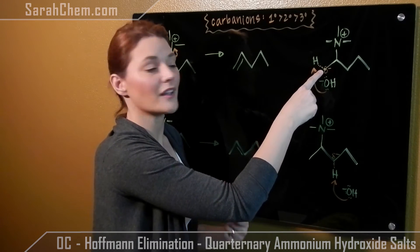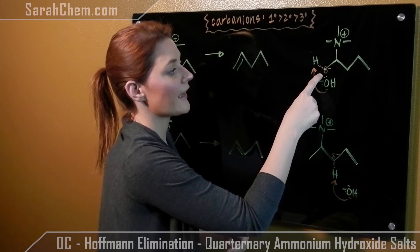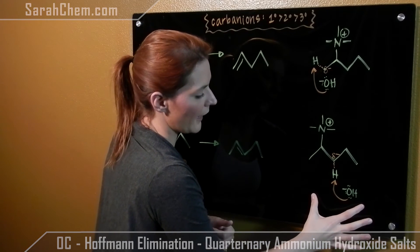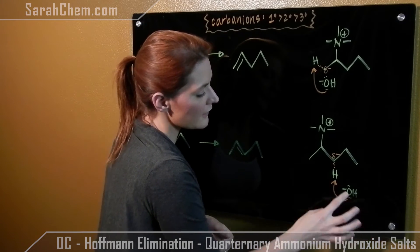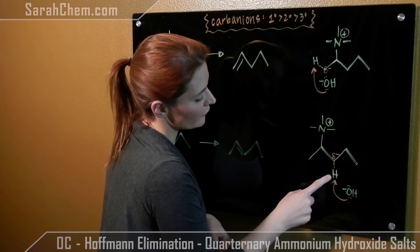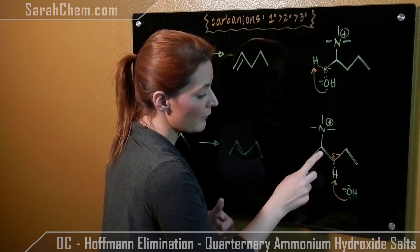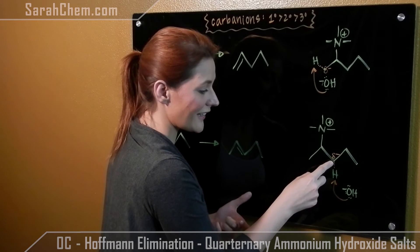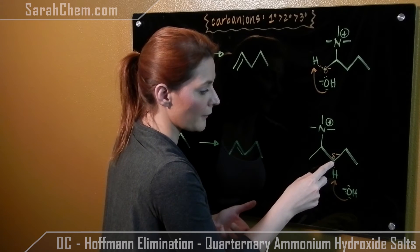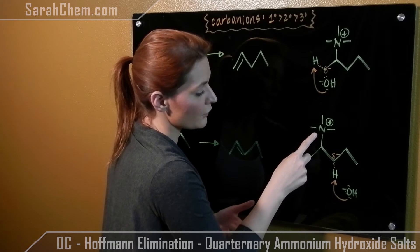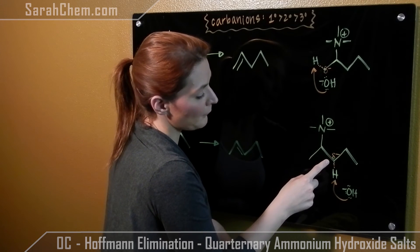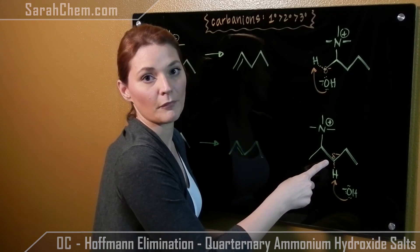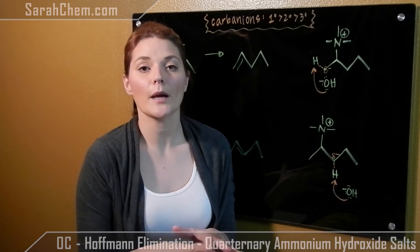So what that means is this carbon is left holding those electrons, meaning it develops a partially negative charge. Exactly the same thing happens here — hydroxide comes and takes this hydrogen. These electrons that should be moving over between alpha and beta are kind of stuck on that carbon because this group won't leave. So we've got a carbanion forming on that secondary position.